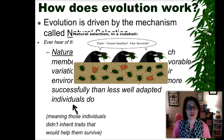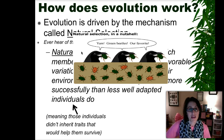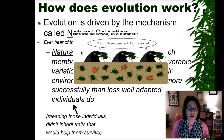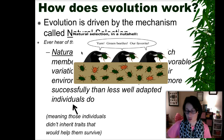Here is a cartoon picture that drives home the point. We have some crows saying 'yum, green beetles, our favorite.' The orange beetles are the ones that have the inherited color trait that makes them non-desirable to the crows, so they're not going to be eaten. What you'll actually see is this population over time changing from a population of largely green beetles to a higher amount of orange beetles, because those crows don't like the orange beetles very much.